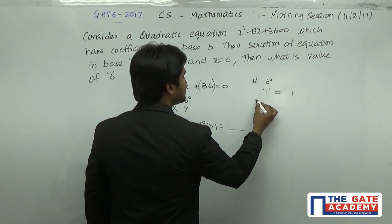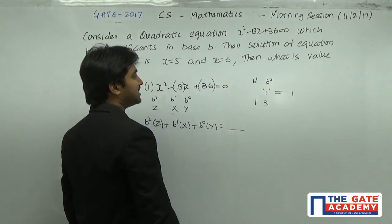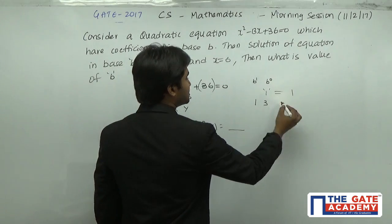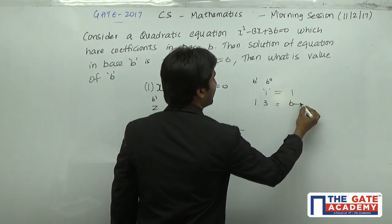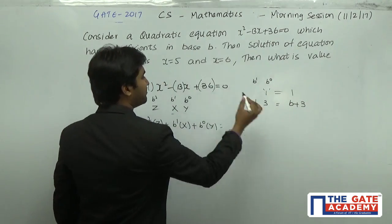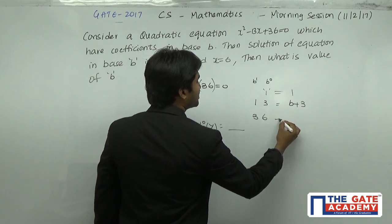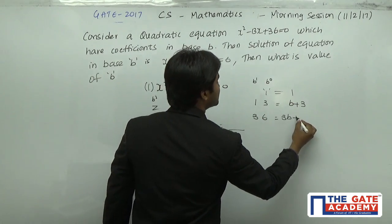Next number is 13. In the form of decimal we can write it as B + 3. Next number is 36. In the form of decimal we can write it as 3B + 6.